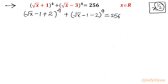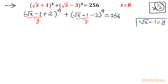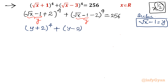What I am now going to do: I will consider √x - 1 as y. Let me write here √x - 1 = y. This is our substitution. So the equation will convert into (y + 2)⁴ + (y - 2)⁴ = 256.